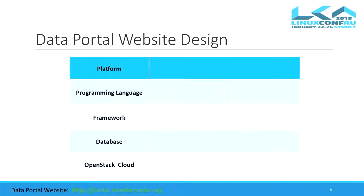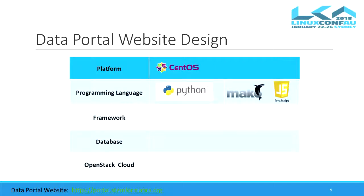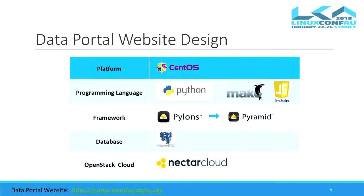The technologies we used in building the data portal: CentOS as the platform, Python as the programming language, and JavaScript for developing the web app. Pyramid was used as the web app framework, PostgreSQL as the database, and Nectar Cloud to store the data files. We also used the Cornish API for RESTful APIs.